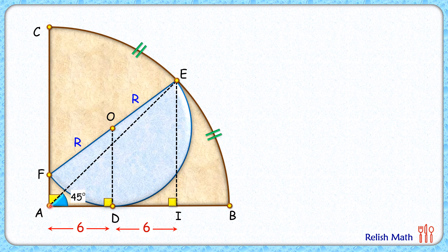And this triangle AEI, this angle will also be 45. So it's a right angle isosceles triangle. The length EI will be the same as AI or 12 centimeters.